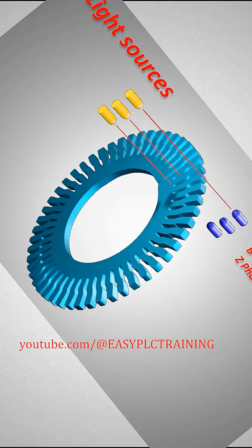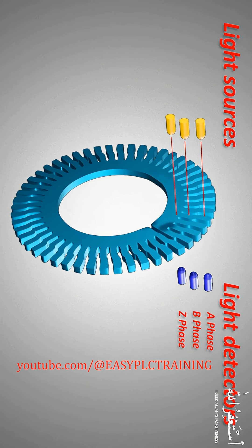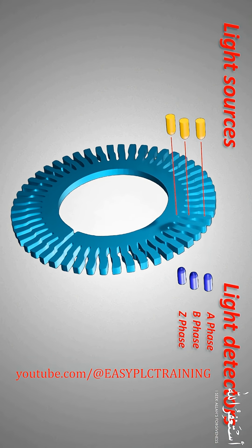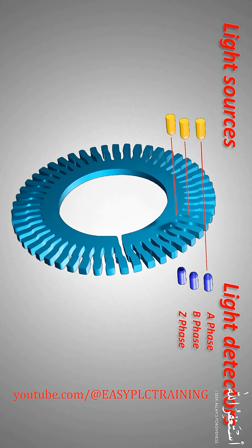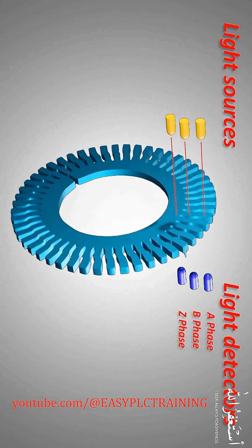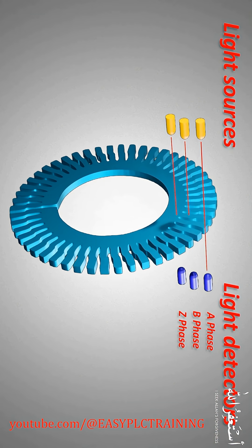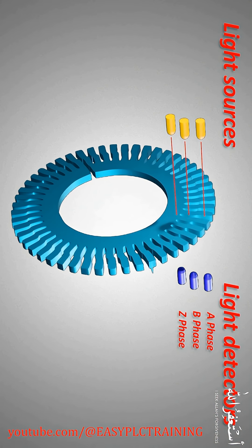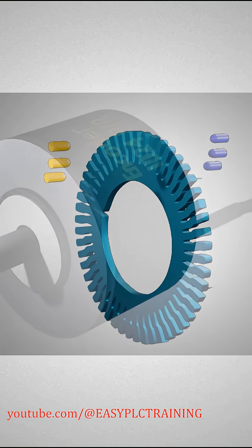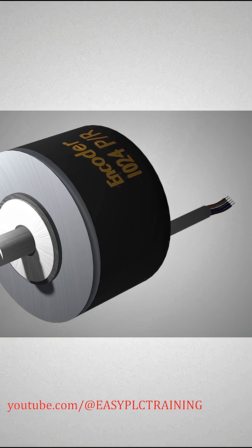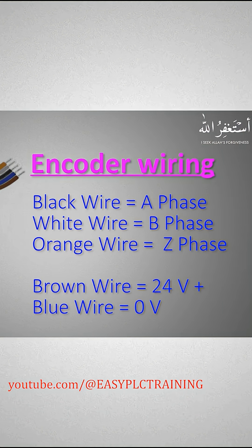When the encoder shaft rotates, the glass plate also rotates. The light beams, whenever aligned with the grooves, pass through the groove and are picked up by the light beam detectors. These signals are then amplified and converted into digital pulses. The encoder finally gives out digital pulse signals at the A, B, and Z phases. Most encoders will use five wires — you can refer to the data sheets for the operating voltage.